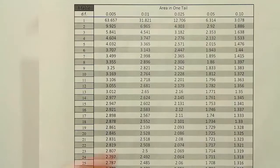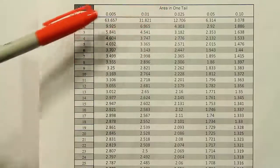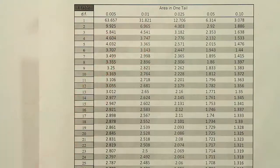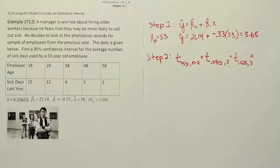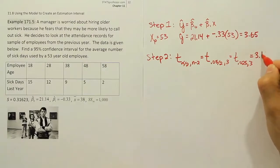We're in the 0.025 column. We're looking at 3 degrees of freedom. We find the value 3.182. That's going to give us 3.182.